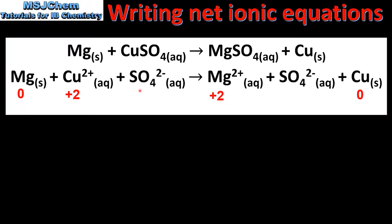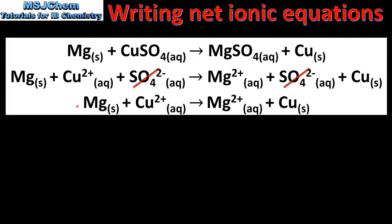The sulfate ion has not been oxidized or reduced, therefore it is the spectator ion. Spectator ions are not included in the net ionic equation, therefore they are crossed out. And here we have the net ionic equation for the reaction.